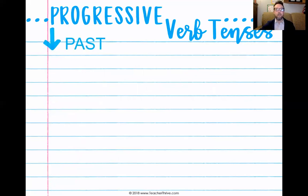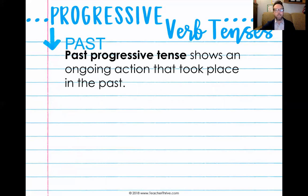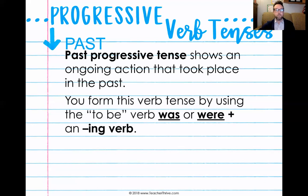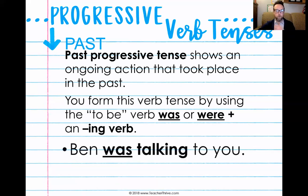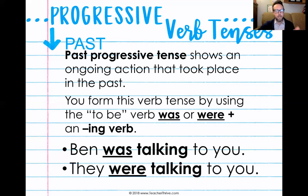If it's happening in the past, past progressive tense shows an ongoing action that took place in the past — something that happened in the past, but was ongoing. You form this verb tense by using the to-be verb — 'was' or 'were' — plus an -ing verb. So 'Ben was talking to you' was something ongoing in the past. Since Ben is singular, we use 'was.' 'They were talking to you' — since 'they' is a plural pronoun, we use 'were.' So you're going to use was or were plus an -ing verb.